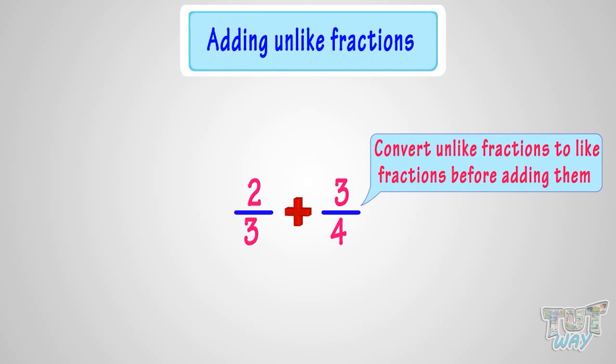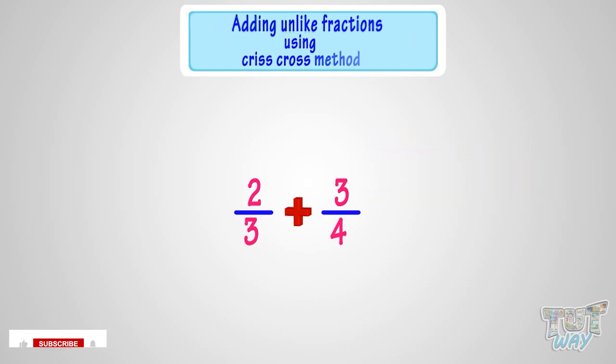Now we will make the denominators same using the criss-cross method. Let's see what is the criss-cross method. In this method, we multiply both the numerator and denominator with the denominator of other fractions.